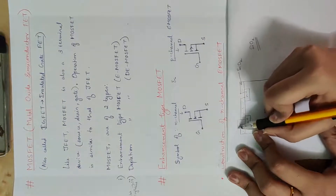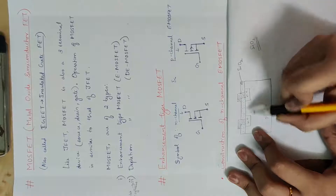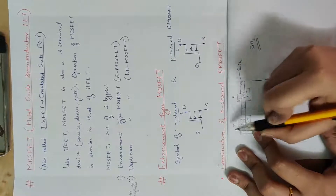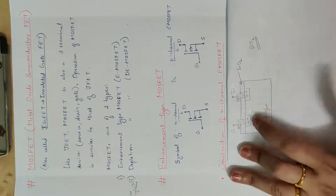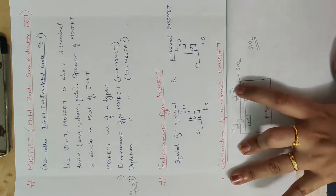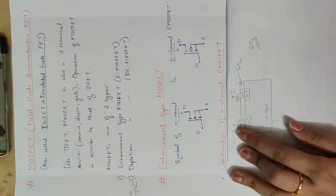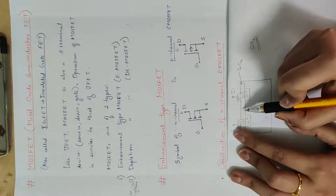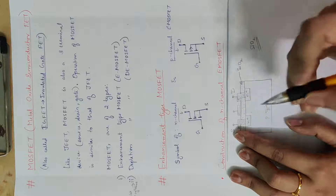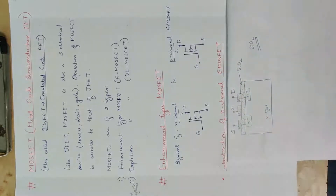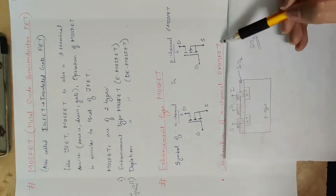We take metal contacts — two metal contacts. We have two contacts: one source and one drain. The N-type regions are in direct metal contact with the drain and source terminals. Over the silicon dioxide layer, we take a metal contact for the gate terminal. This is the construction of the N-Channel E-MOSFET.